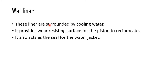The dry liner is directly connected metal-to-metal to the cylinder block and does not directly touch the cooling water. This system radiates the heat to the engine block, and the engine block then transfers the heat to the water.